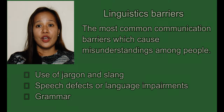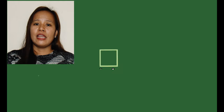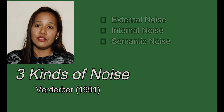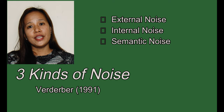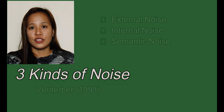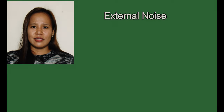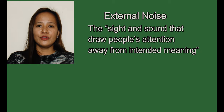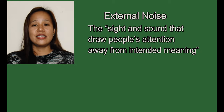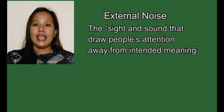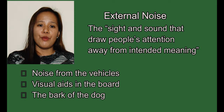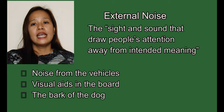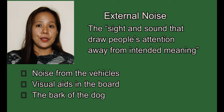Similarly, communication barriers can also be classified into three kinds of noise: internal noise, external noise, and semantic noise. External noise is similar to physical barriers — it includes sights, sounds, or anything that draws people's attention away from the intended meaning. Examples include noise from vehicles, visual aids used by a teacher during discussion, and a dog barking. These can all be barriers to communication.